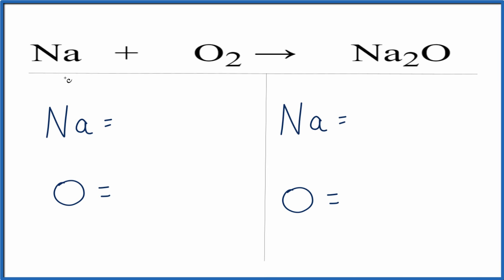We have, on the reactants, one sodium and then two oxygens. Over on the products, we have two sodiums and one oxygen, so they're kind of almost reversed here.